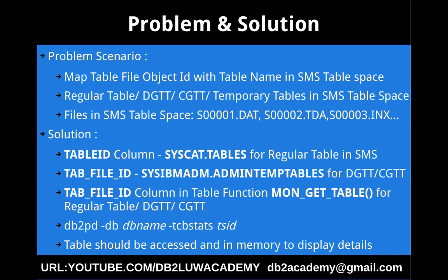So what is the solution? How to map this? If it is a simple regular table in SMS tablespace, you can use the table ID column in syscat.tables for your corresponding table name, or you can filter based on the tablespace ID. The table ID value — if it says 2, it means it is s0002.dat or .tda file, like that.